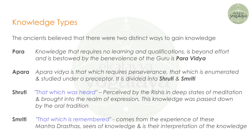The knowledge types: the ancients believed that there were two distinct ways to gain knowledge. Paravidya is the knowledge that requires no learning and qualification — it is beyond effort and bestowed by the benevolence of the Guru. Aparavidya is that which requires perseverance, that which is enumerated and studied under a preceptor. It is divided into Shruti and Smriti.